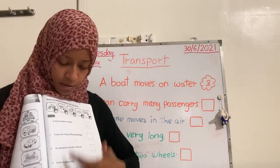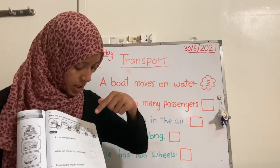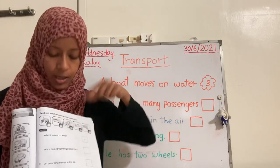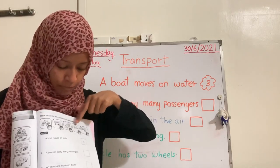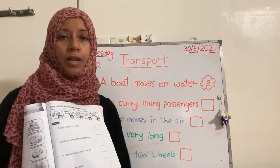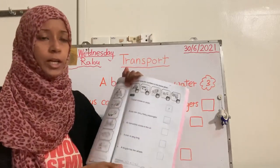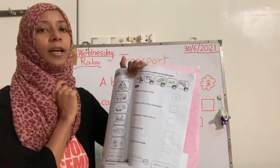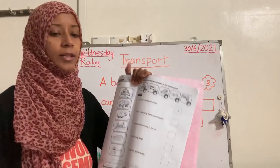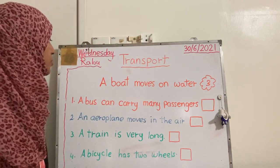You have four sentences, four boxes, and five pictures. Each picture represents one of these sentences. So you have to read the sentence and put the right number of the picture. Let's do it together. Number one is already given to you.